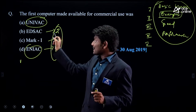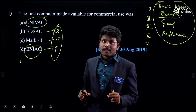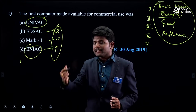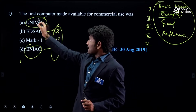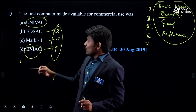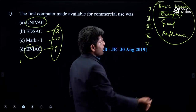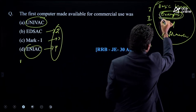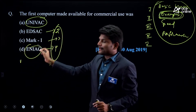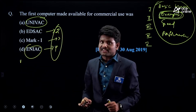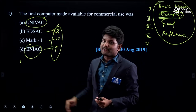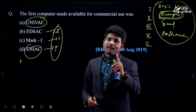A second generation computer cannot be the first computer; a third generation computer cannot be the first computer; a fourth generation computer cannot be the first computer. Only the first generation computer can be the first commercial computer. So if you remember all example computers of each generation, you can easily answer such questions.